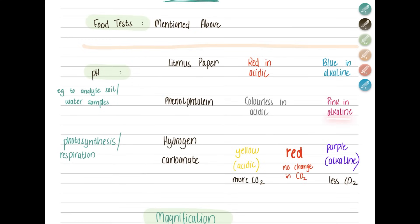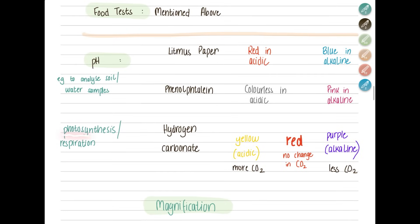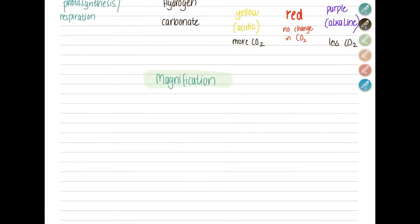Hydrogen carbonate indicator is used in photosynthesis or respiration experiments because these release carbon dioxide. Originally it's red; if there's no change it remains red. As carbon dioxide increases with respiration, it becomes more acidic and the color changes to yellow. If carbon dioxide decreases — indicating photosynthesis — pH increases and the color changes from red to purple.